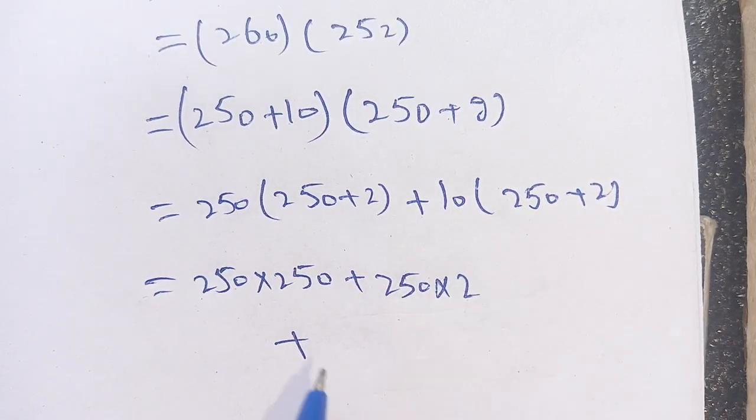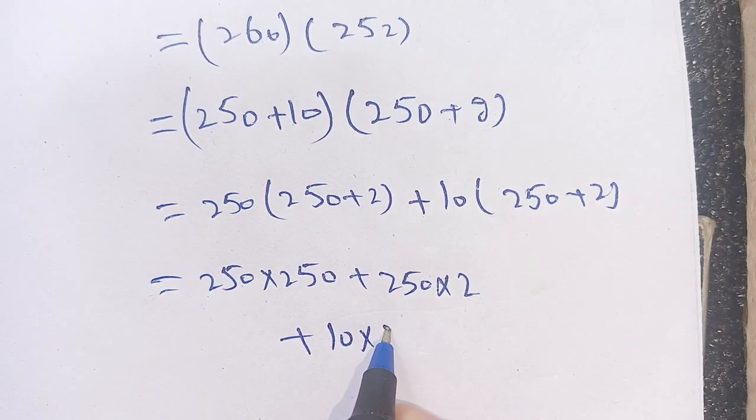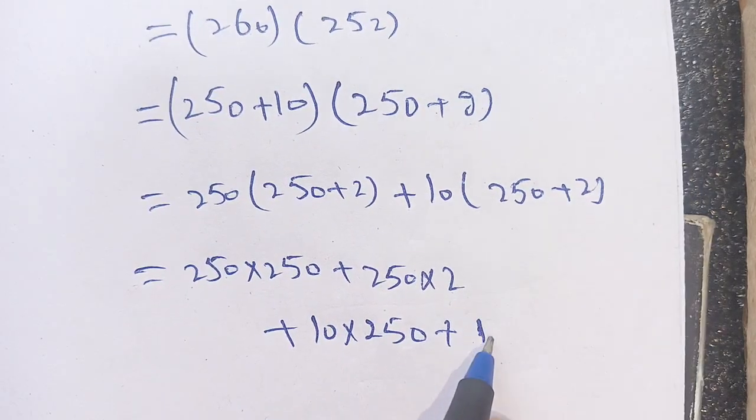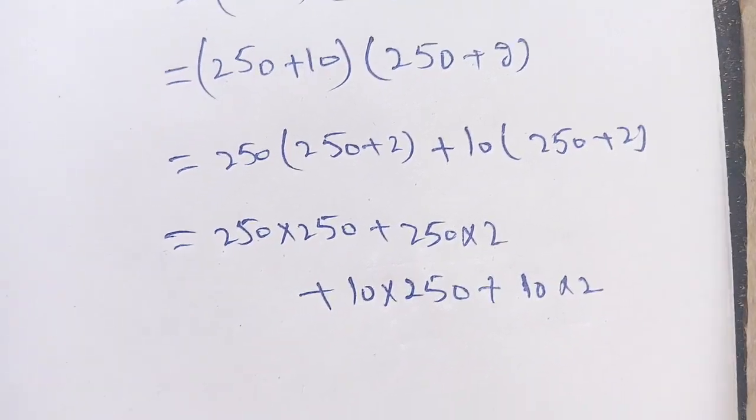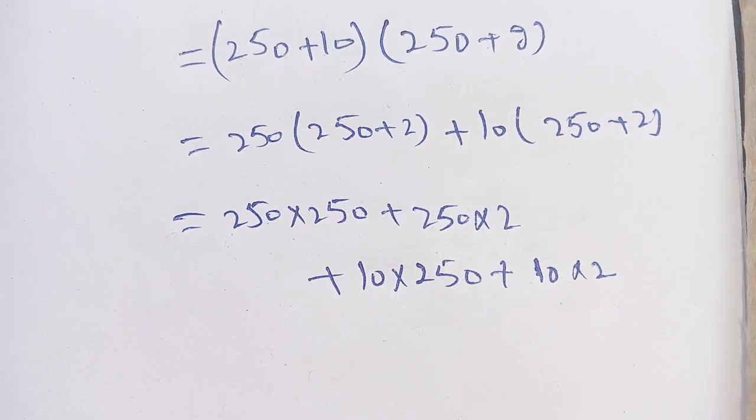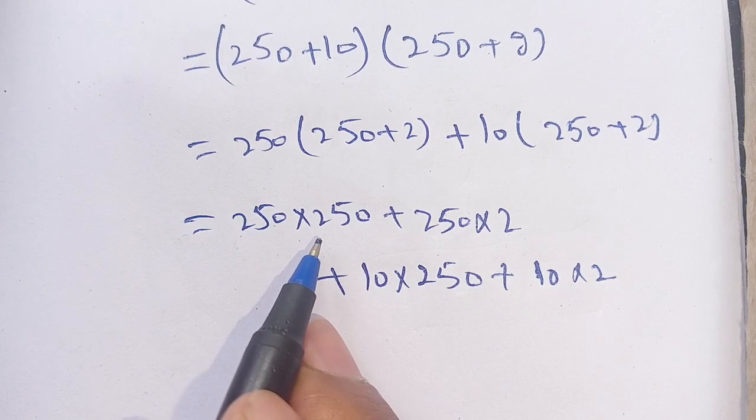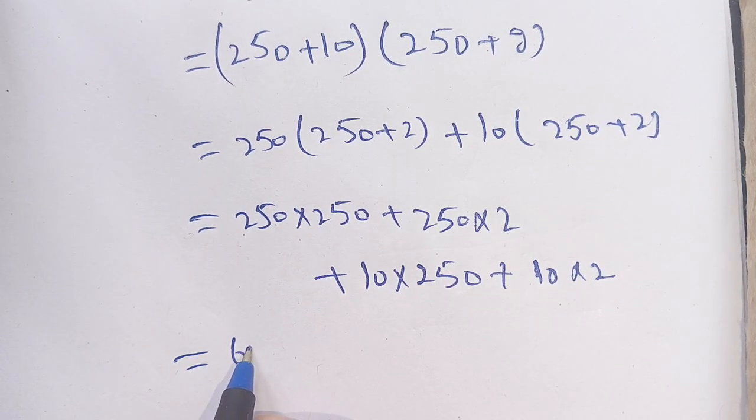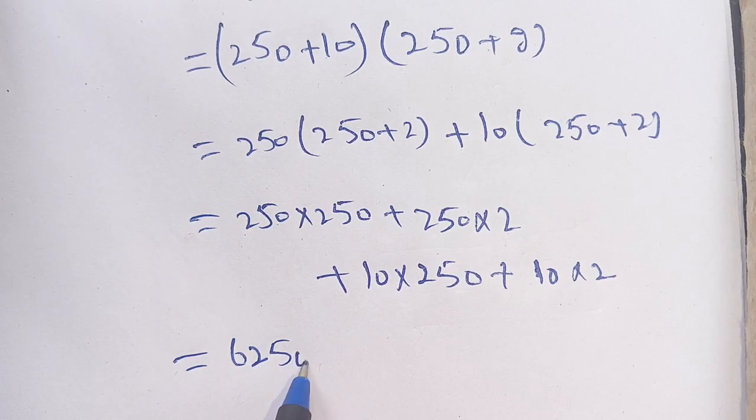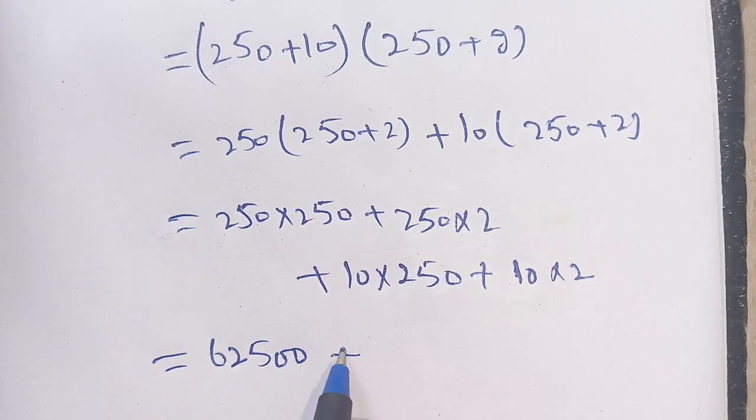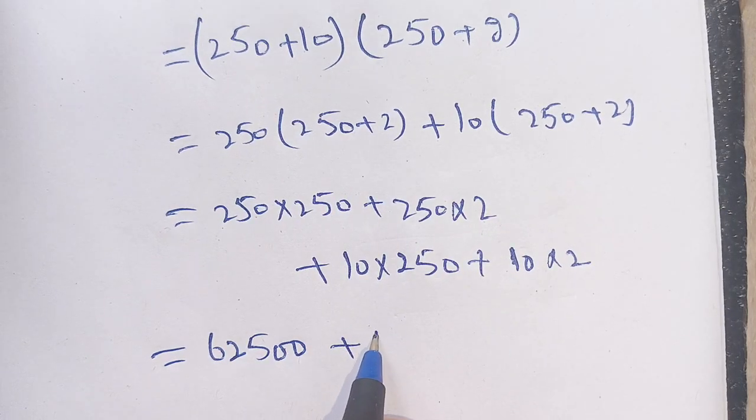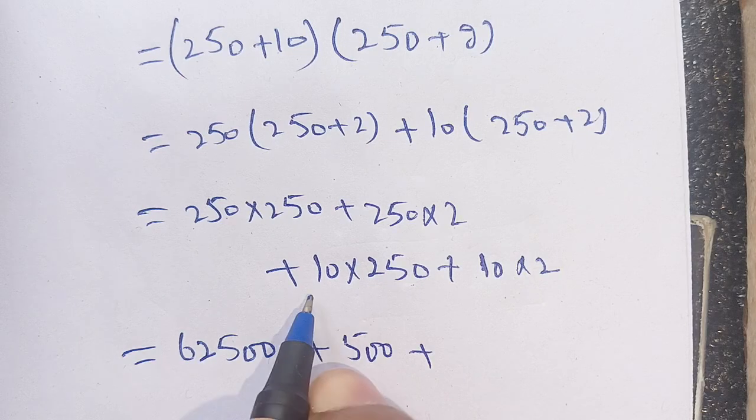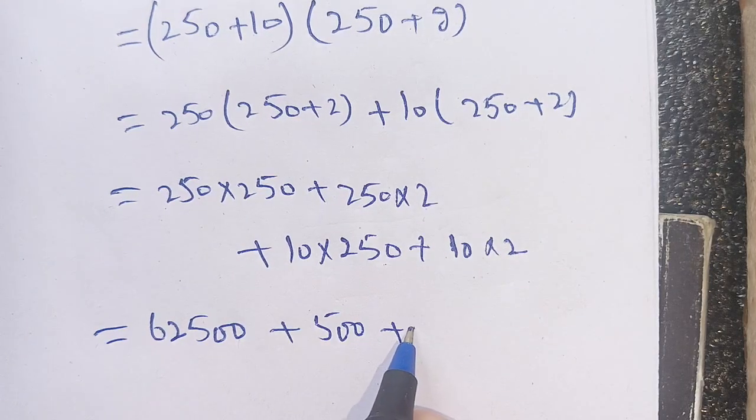250 times 250 equals 62,500, plus 250 times 2 which is 500, plus 250 times 10 which is 2,500, plus 10 times 2 which is 20.